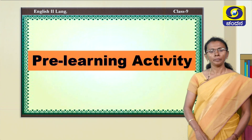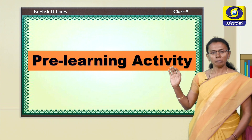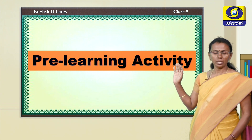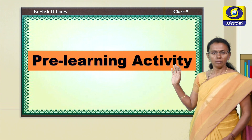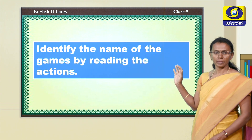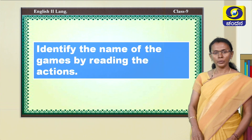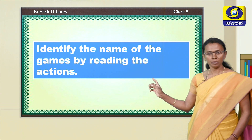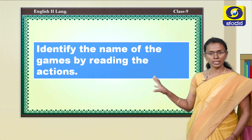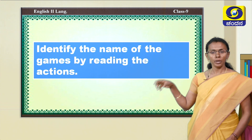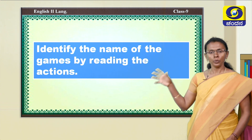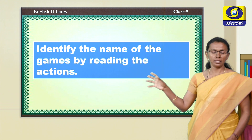Take your textbooks, take the pre-learning activity from the textbook. Now first, what you have to do is identify the names of the games by reading the actions. You will see an action and by that you have to identify and recognize which game that is.